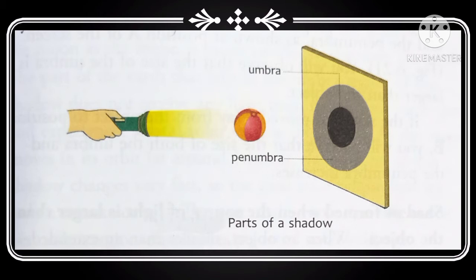But the penumbra is a region of partial darkness which surrounds the umbra. A region of partial darkness which is surrounded by umbra is called penumbra.